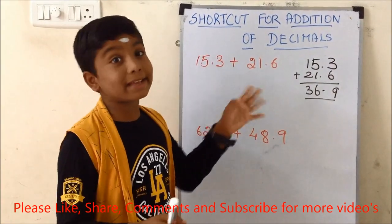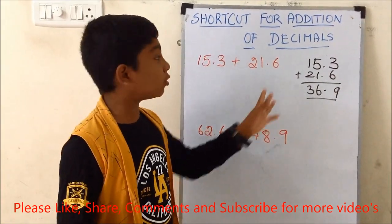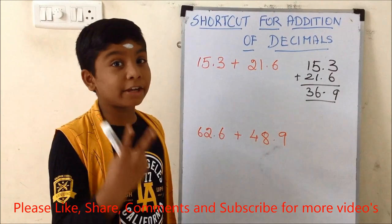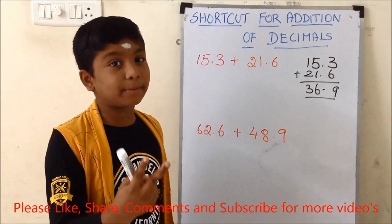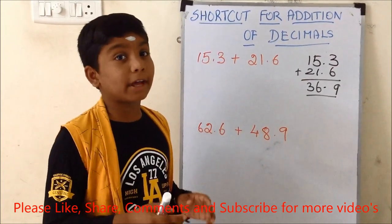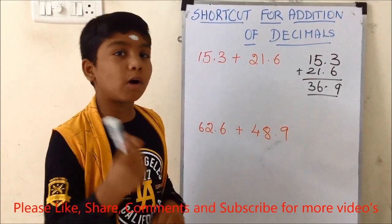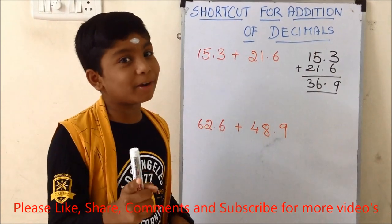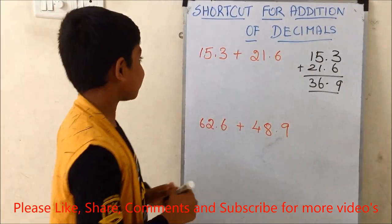This is easy for us when adding only two decimal numbers. But when we get more numbers, what will we do? For that, I am going to show this shortcut trick.